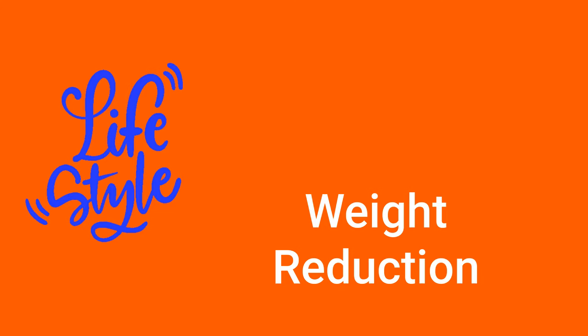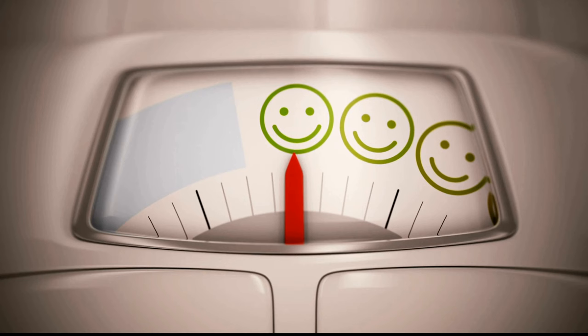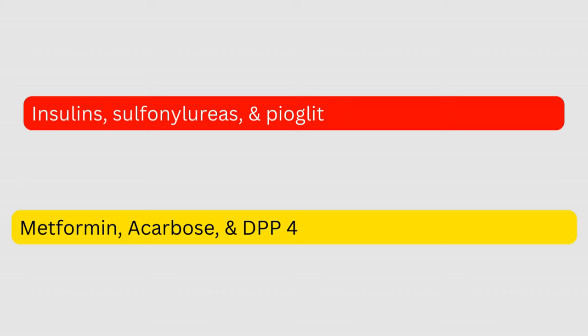Starting with weight reduction: weight loss more than 5% improves glycemic control, lipid levels, and blood pressure in overweight and obese adults with type 2 diabetes. We also need to understand the effects of diabetes medications on body weight. Insulins, sulfonylureas, and pioglitazone cause weight gain. Metformin, acarbose, and DPP-4 inhibitors are weight-neutral.